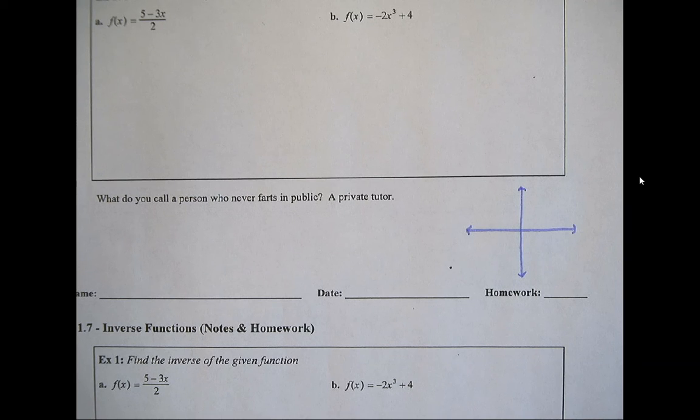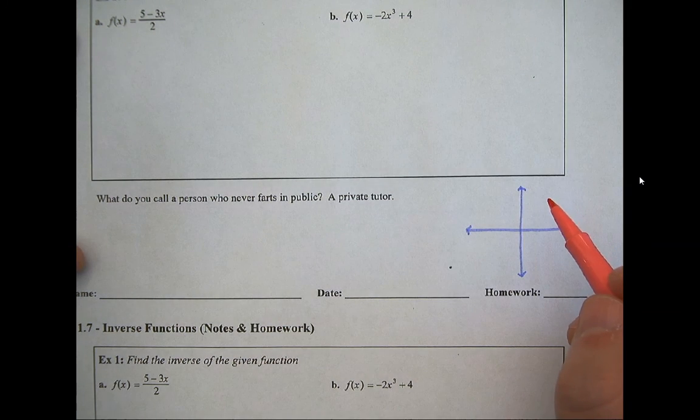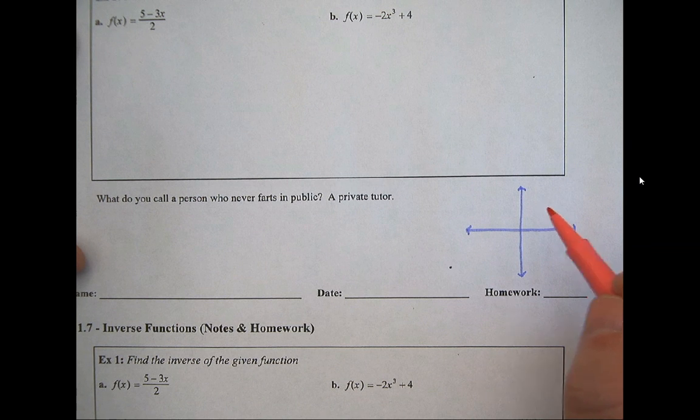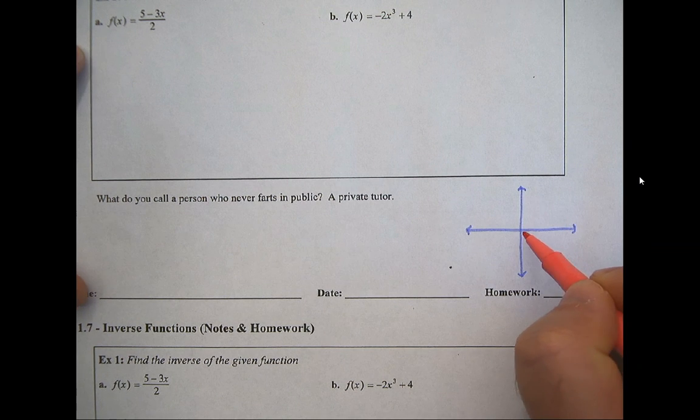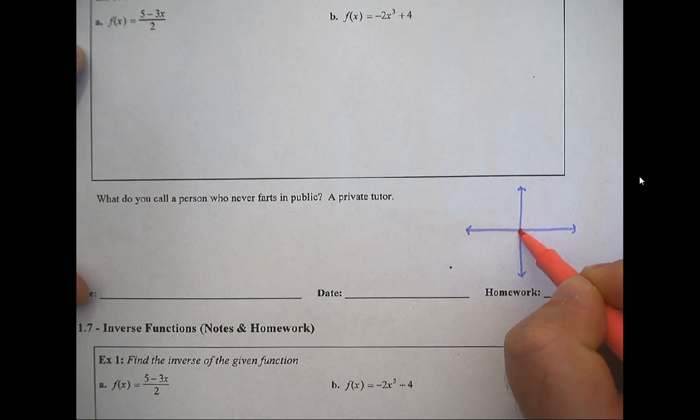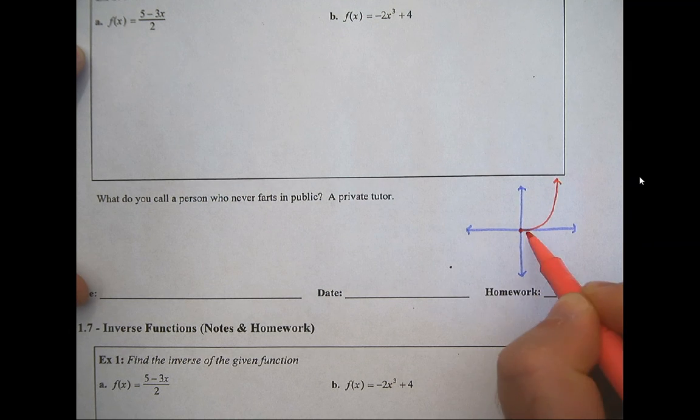Functional inverses, to undo a function, would be to take all of your x values and all of your y values and switch them around, trade those around. For instance, if I had some function, what would be a nice function to try to draw the inverse of? Maybe a cubic. So we just talked about parent functions last unit. I'm going to draw a cubic function.